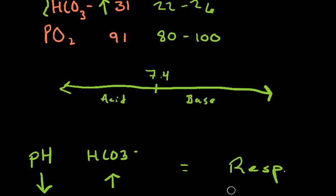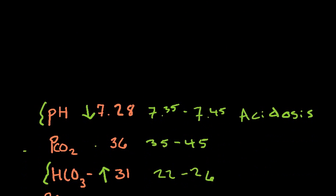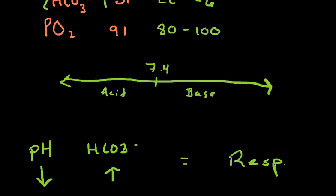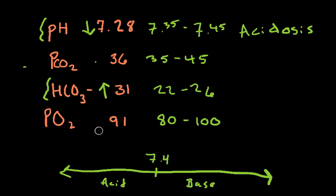What we came up here is respiratory acidosis, because we came up with respiratory, because the pH and the bicarbonate are going in opposite directions, which means it's respiratory, and we already determined that it's acidosis, because the pH is decreased.